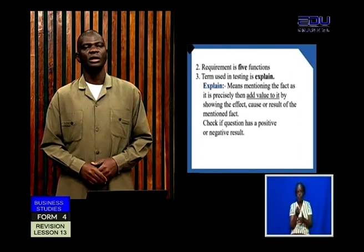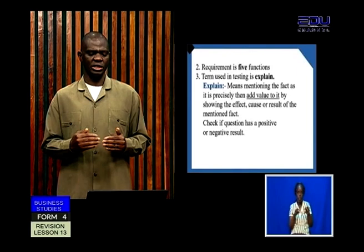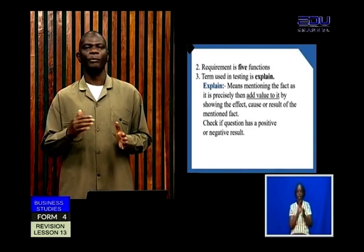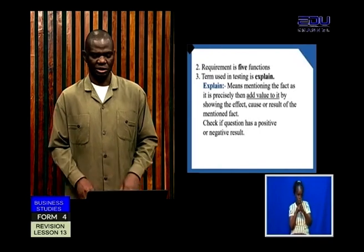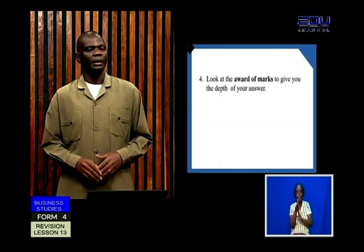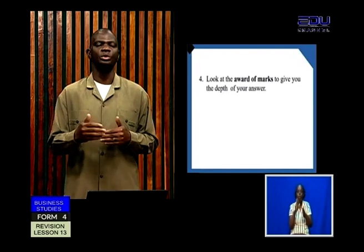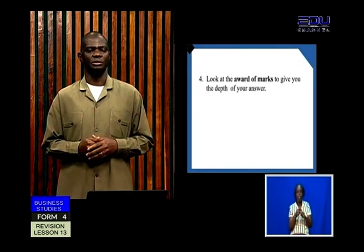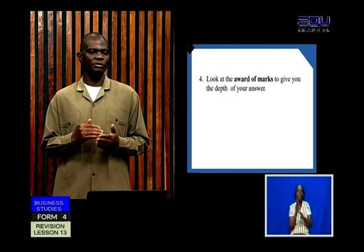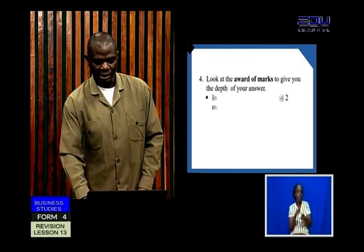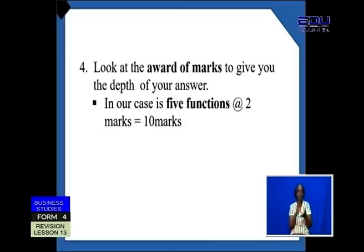After that, we need to check our question. Which direction is it giving us? Is it giving us a positive direction or a negative direction? We also need to look at the award of marks. If the marks are more — let's say two — then it means we must add more value. If it is one, then we give a shorter depth of our answer. In our case, we have five functions, and each of the five functions will get two marks, for a total of 10 marks.